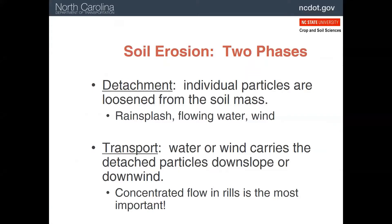Soil erosion happens in two phases. First, the particles have to become detached from the soil mass. This can be done by raindrops, flowing water, or even wind. Next, these particles have to be transported down the slope or with the wind. Note that a lot of soil gets transported in rills and gullies.